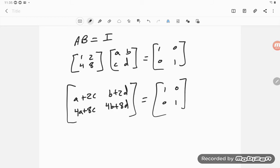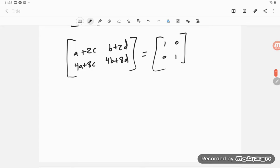We get that matrix and that matrix needs to be equal to 1 0 0 1. Well, for a matrix to be equal, each component has to be equal. So we have a plus 2c is equal to 1 and 4a plus 8c is equal to 0.